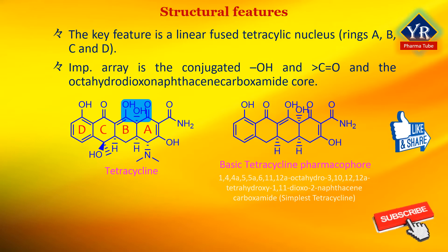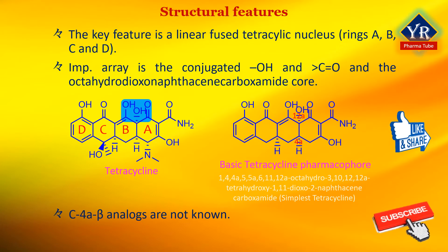The absolute stereochemistry is crucial — only compounds that possess the naturally occurring configurations at the 4A and 12A positions, i.e. the AB ring junction, are active as antibacterial agents. No unambiguously proven C4A beta analogs are known, so the stereochemical requirement at this position is inferred.